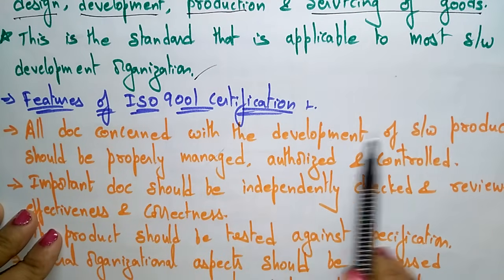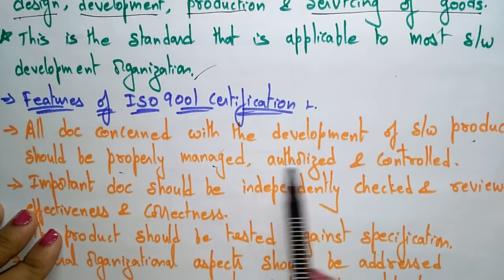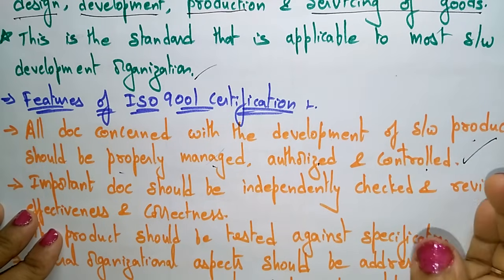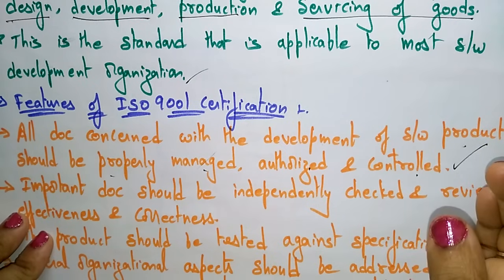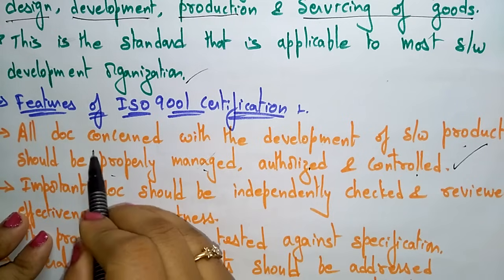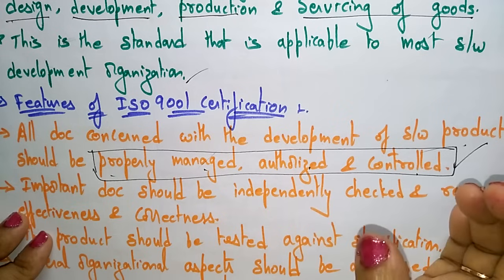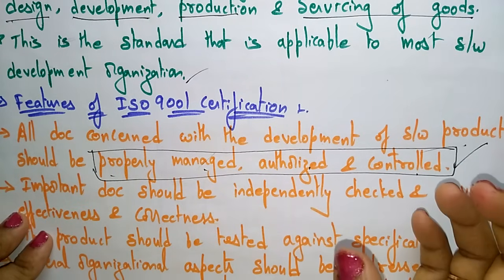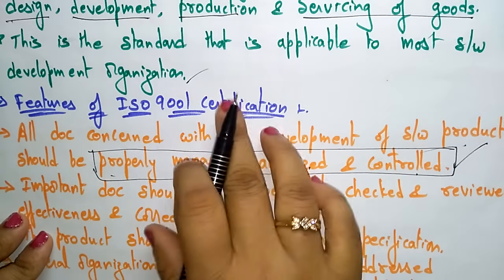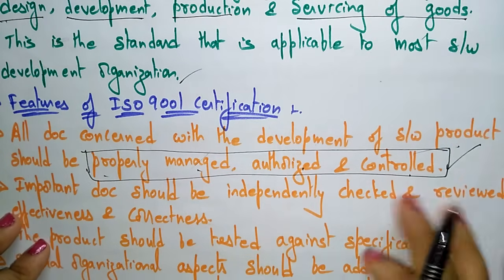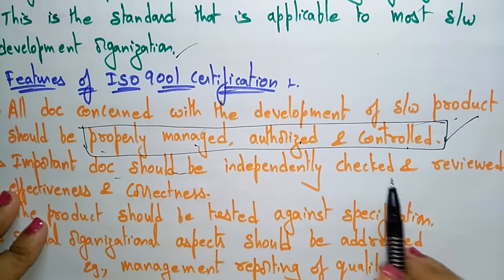The features present in the certification are: first, all documents concerned with the development of the software product should be properly managed, authorized, and controlled. Whatever product they are going to develop, the related documents should be properly managed, authorized, and controlled. If they are following that, then the ISO 9001 certification will be given to that product, and customers will check this certification before purchasing.